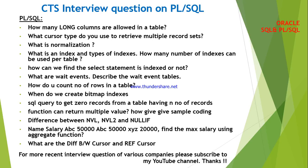So here we go. The first question is: how many LONG columns are allowed in a table? What cursor type do you use to retrieve multiple record sets? What is normalization? What is an index and types of indexes? How many indexes can be used per table? How can we find if a SELECT statement is indexed or not? What are wait events? Describe a few wait event tables. How do you count the number of rows in a table? When do you create bitmap indexes, and what is the SQL query to get zero records from a table having N number of records?